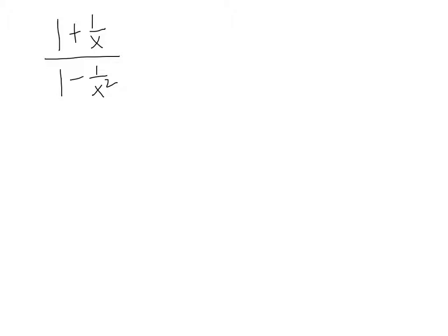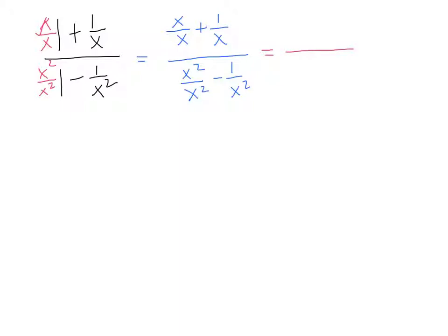If I look at the numerator, I need to have a denominator of x, so I would need to multiply 1 by x over x. If I look at the denominator, I need a common denominator of x squared, so I'm going to multiply the 1 by x over x squared. When we carry this out, we end up with x over x plus 1 over x, over x squared over x squared minus 1 over x squared. We can add or subtract these fractions: x plus 1 over x for the top, and x squared minus 1 over x squared for the denominator.